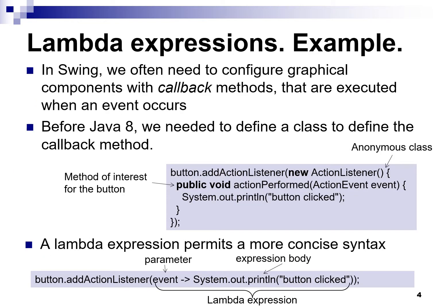Let's start with a motivating example. Remember, in Swing — which is a library to build graphical user interfaces in Java — it's very common to configure graphical components with callback methods, methods that are executed whenever the user interacts with the component, for example by clicking on it. Before Java 8, what you needed to do is define a class for the callback methods. For example, this is the way you would do it with an anonymous class.